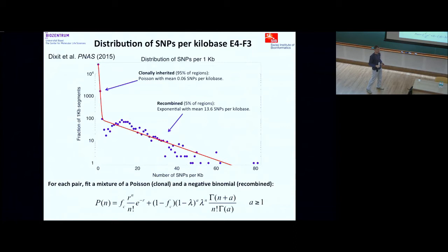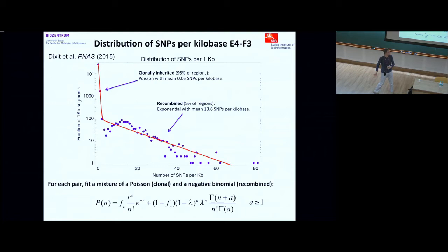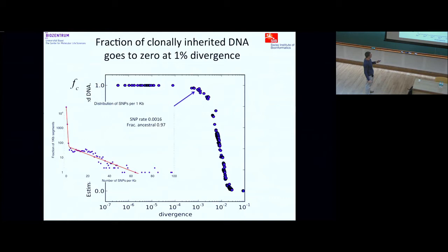Once we have that fit, for each pair of strains we get three numbers: what fraction of the genome blocks is still ancestral versus recombined, what is the average SNP distance in the non-recombined blocks (reflecting the distance to their common ancestor), and what is the average distance in the recombined regions.